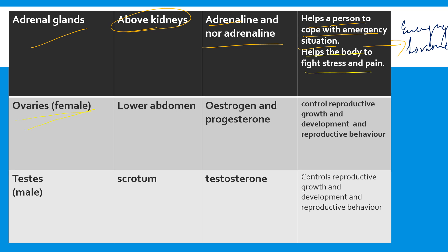The ovaries are located in the lower abdomen and secrete estrogen and progesterone, which control reproductive behavior, growth, development of the female body, and secondary sexual characters. The testes are located in the scrotum of the male reproductive system and secrete testosterone, which controls the reproductive organs, growth, development, and reproductive behavior of the male body. These are the key glands, their locations, hormones secreted, and their functions.